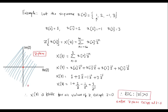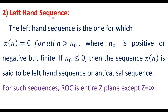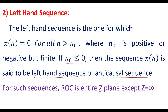Left-hand sequence, or left-sided sequence, is the one for which X(n) is 0 for all n greater than n0, where n0 is a positive or negative but finite number. If n0 is less than or equal to 0, then the sequence X(n) is said to be a left-hand or anti-causal sequence. For such sequences, the ROC is the entire Z-plane except Z equal to infinity.